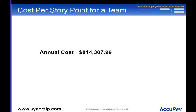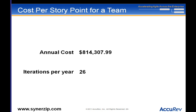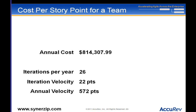Part of a scrum master's time — because they're working on multiple teams — part of a product owner's time, and part of a manager's time managing multiple projects are included, but the QA, dev, and doc folks are all fully dedicated to that team. So the controller gives you the fully loaded cost of that team for a year. Their iteration length is two weeks, so that means 26 iterations per year, and their iteration velocity is 22 points — giving 572 points per year.